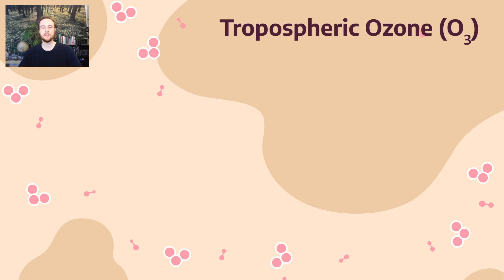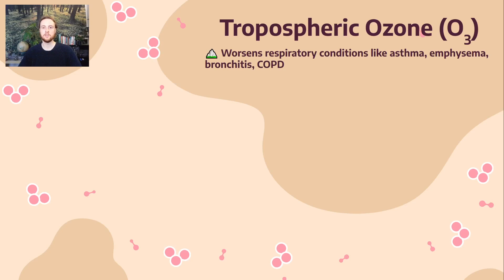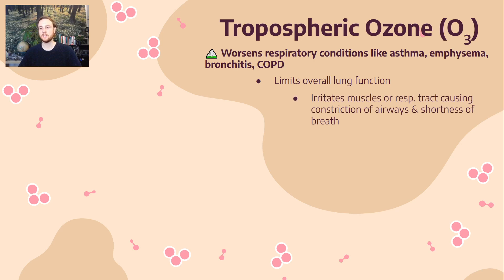We'll wrap up by talking about tropospheric ozone. Tropospheric ozone — O3 — is a general respiratory irritant that decreases lung function and worsens pre-existing respiratory conditions like asthma, emphysema, bronchitis, or COPD. It's not so much that it gives you an acute lung disorder, but it worsens overall lung function and exacerbates pre-existing respiratory conditions. It can also irritate the muscles of the respiratory tract, constrict the bronchioles or air passageways bringing air into your lungs, and irritate the eyes, making it harmful for multiple systems but primarily the respiratory system.